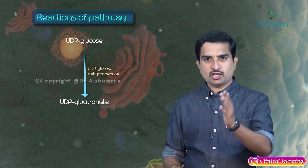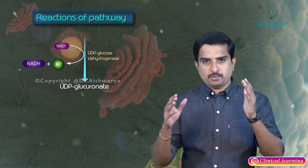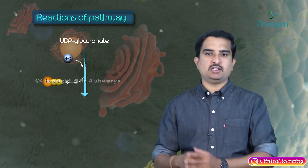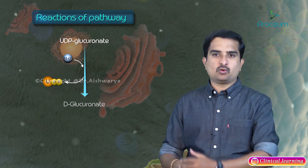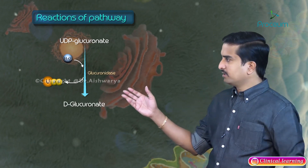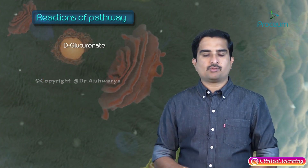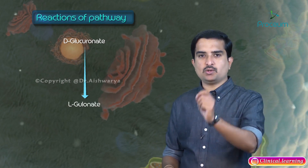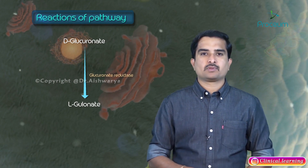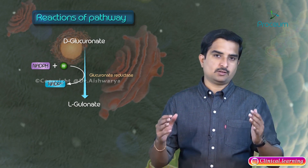In this step, one molecule of NADH is synthesized. The UDP-glucuronate on hydrolysis loses its UDP moiety to form D-glucuronate in the presence of the enzyme glucuronidase. D-glucuronate is then reduced to L-glucuronate in the presence of the enzyme glucuronate reductase, producing one molecule of NADH.